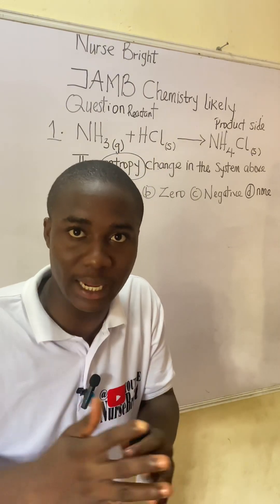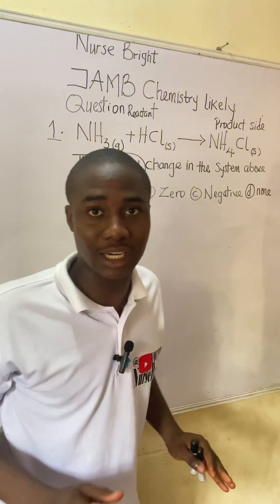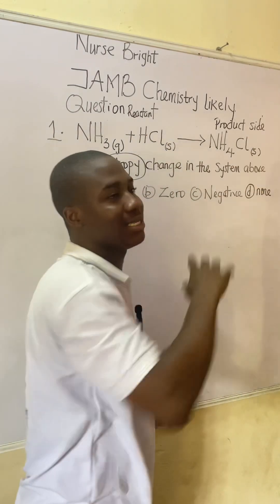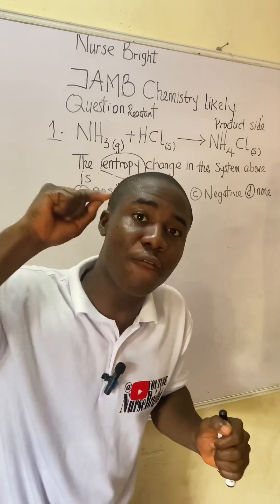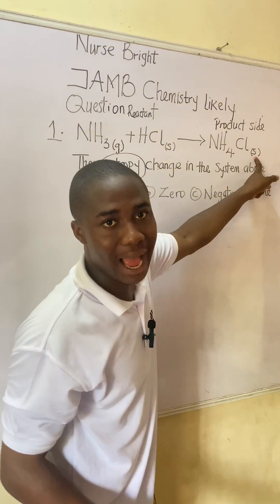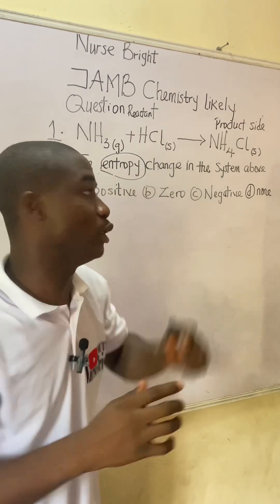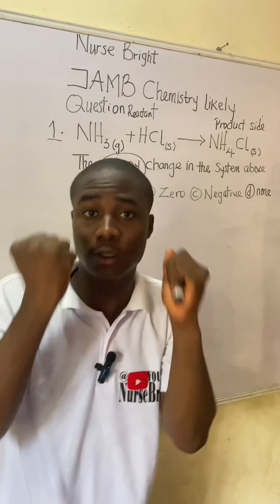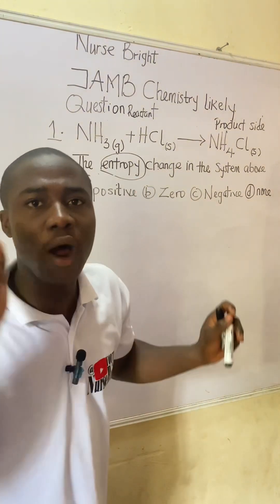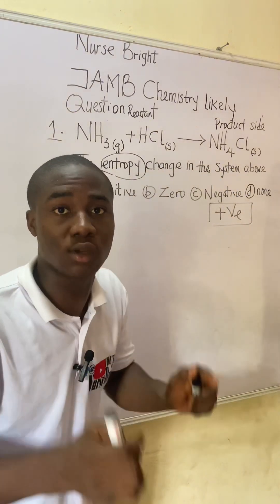This must be noted: the product side is always on the right-hand side for all types of reactions in chemistry. If the product side of a reaction has more gas species than the reactant side, we simply say the entropy change of that reaction is positive.